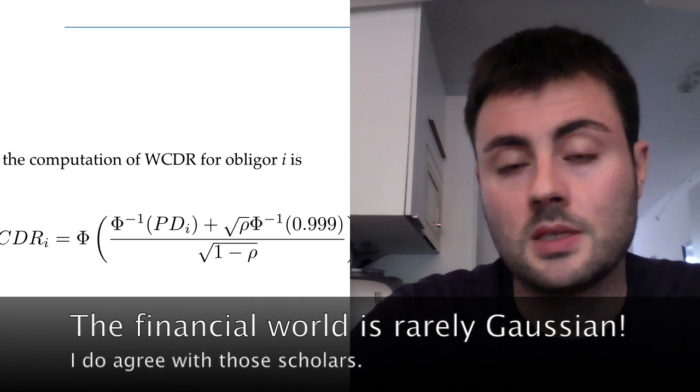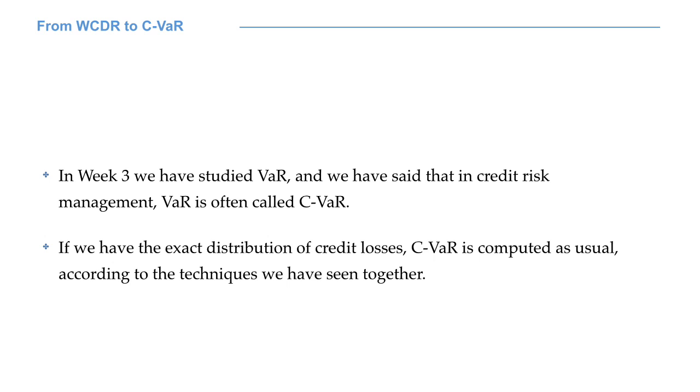In week 3, we have studied value at risk, and we have said that in the credit risk framework, value at risk is often called C-VaR. If we have the exact distribution of credit losses, C-VaR is computed as usual, according to the techniques we have seen together. It is nothing more than a quantile of the loss distribution.